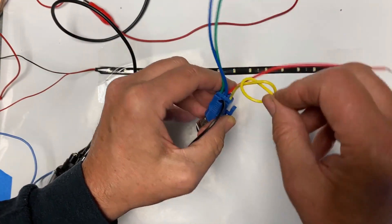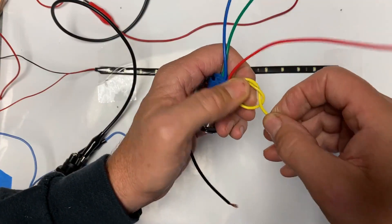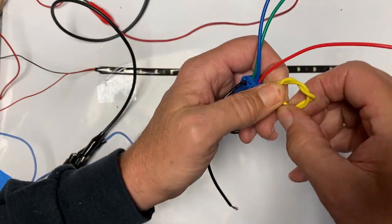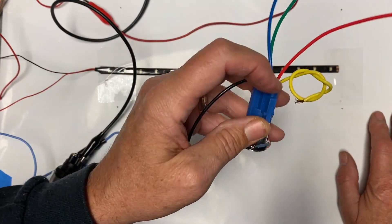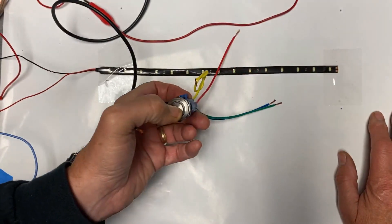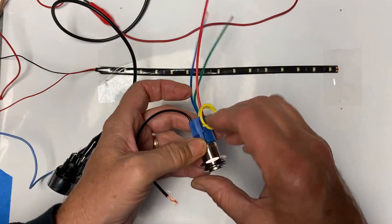The yellow is a normally closed contact. We don't really use this. You would use it if you wanted whatever you had connected to be always on, and then shut off briefly when you push the button. We don't have much use for that.